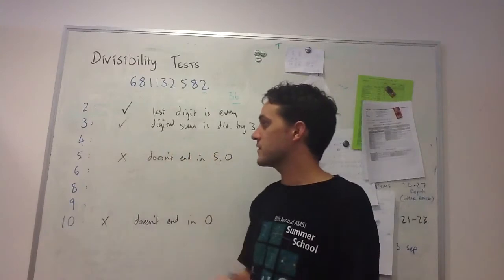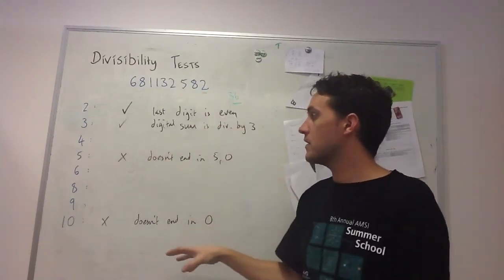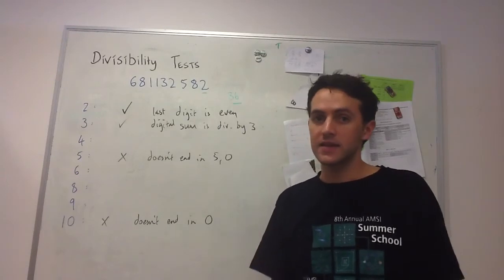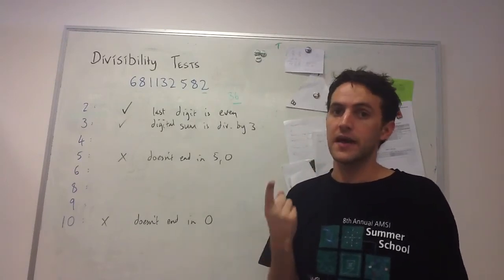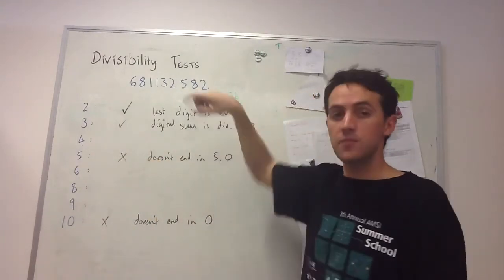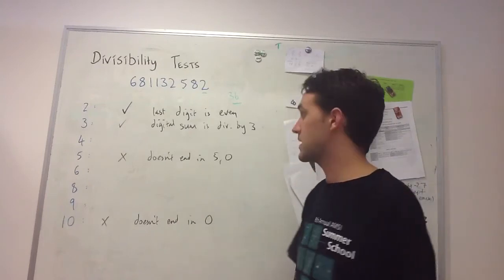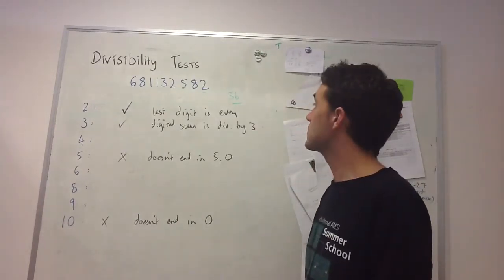Next, we move on to the test for 4. With 2, 5, and 10, all those numbers go evenly into 10, which is why we only need to look at the last digit. With 4, we need to look at the last 2 digits because 4 goes evenly into 100 but not into 10. The last 2 digits are 82.